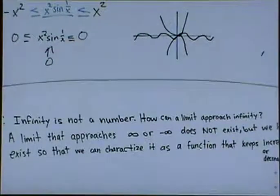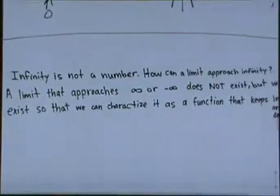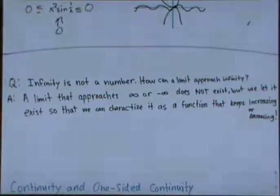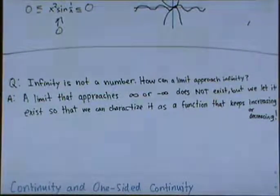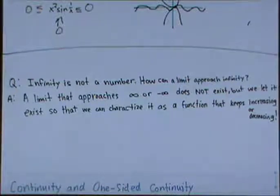Here's an important question: infinity is not a number, so how can a limit approach infinity? When a limit approaches infinity or negative infinity, it technically does not exist. But we allow it so that we can characterize the behavior of the function — it just keeps increasing or decreasing but never actually reaches there.